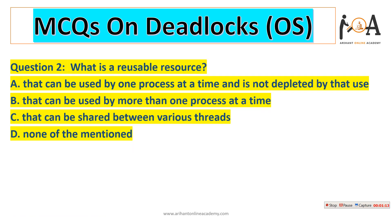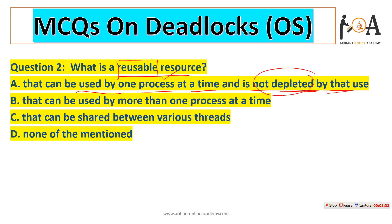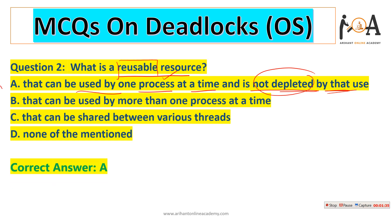The next question is: what is a reusable resource? Reusable means we can use that resource after the first use as well. Option A — that can be used by one process at a time and is not depleted by that use — means we can use it by one process at a time and after that it is not depleted, so we can use it again. Option A is the correct answer.